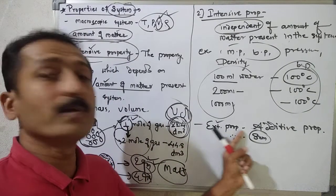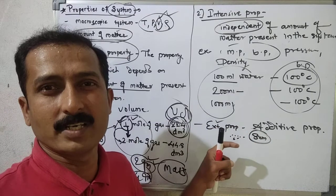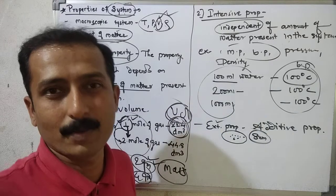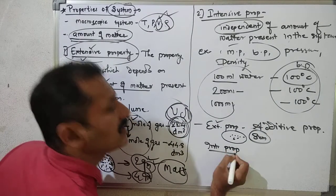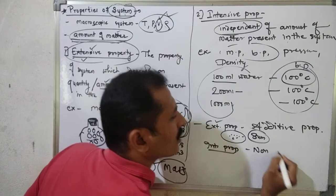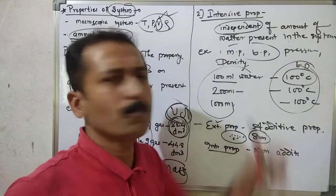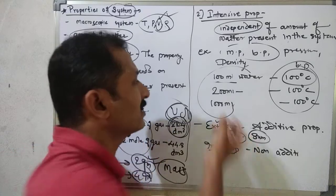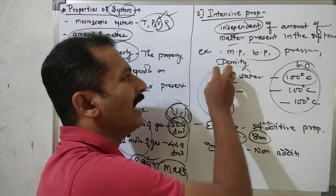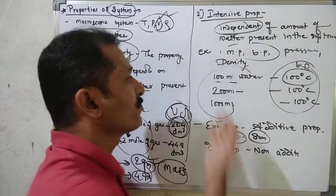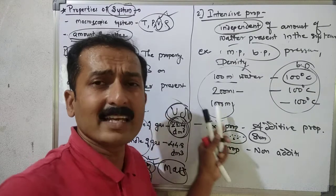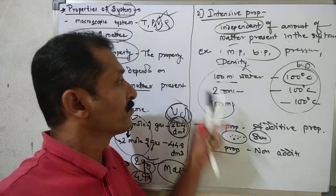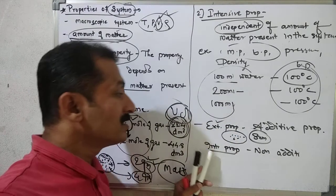The summation of all particles gives the extensive property of the gas. So extensive property is additive property. On the other hand, intensive property is non-additive property.